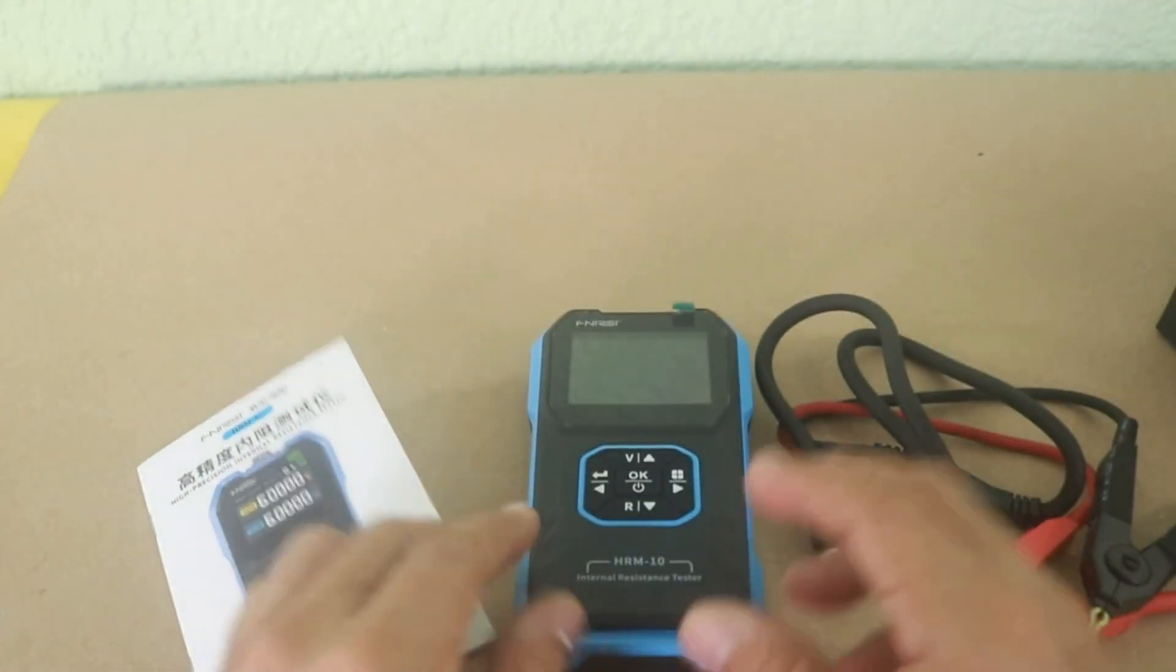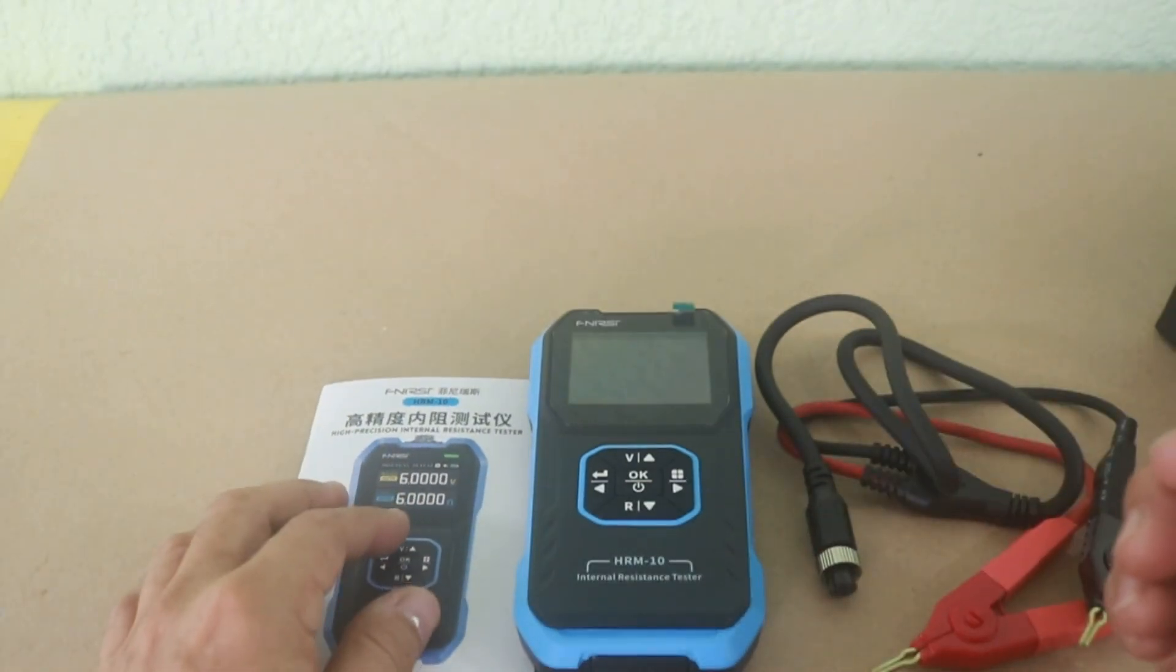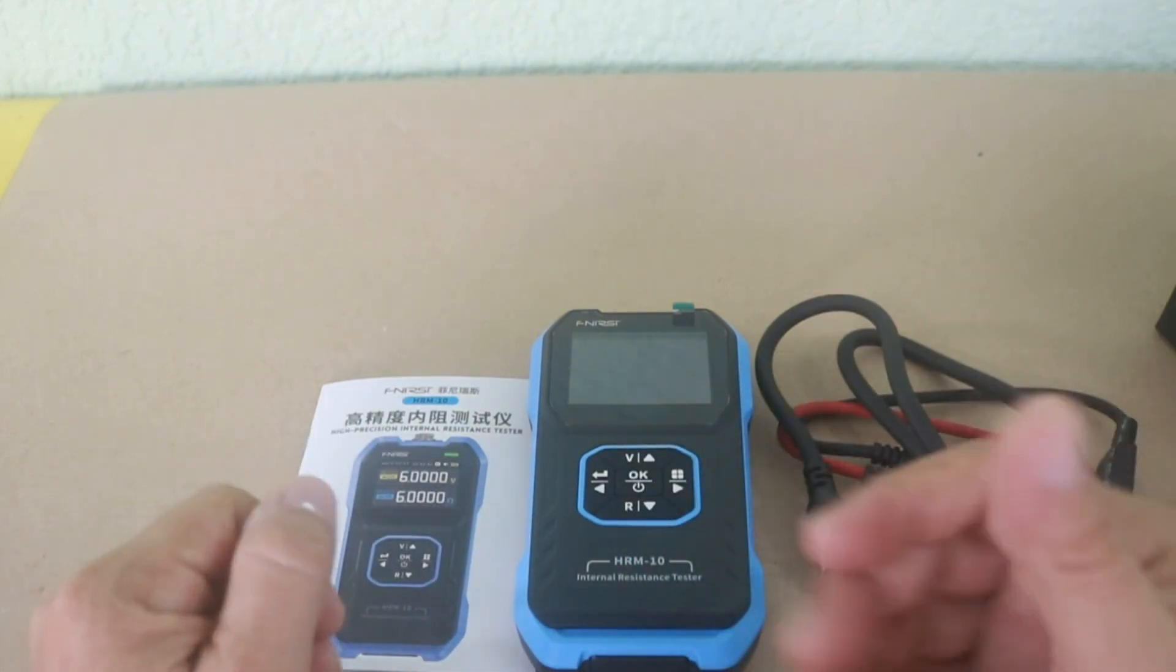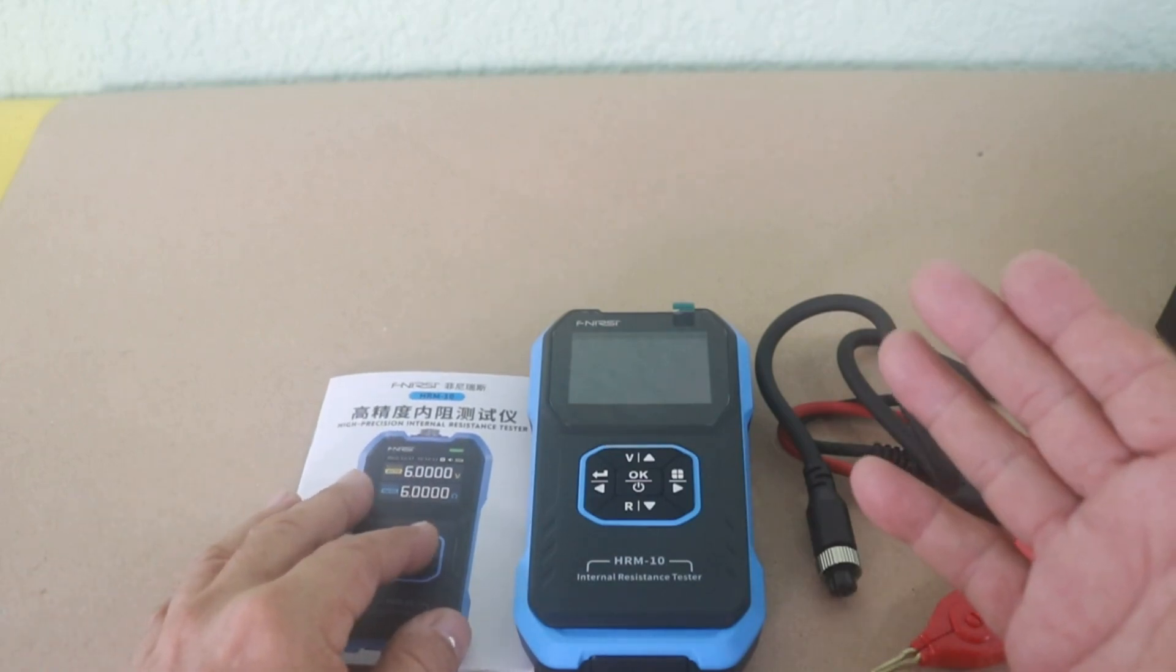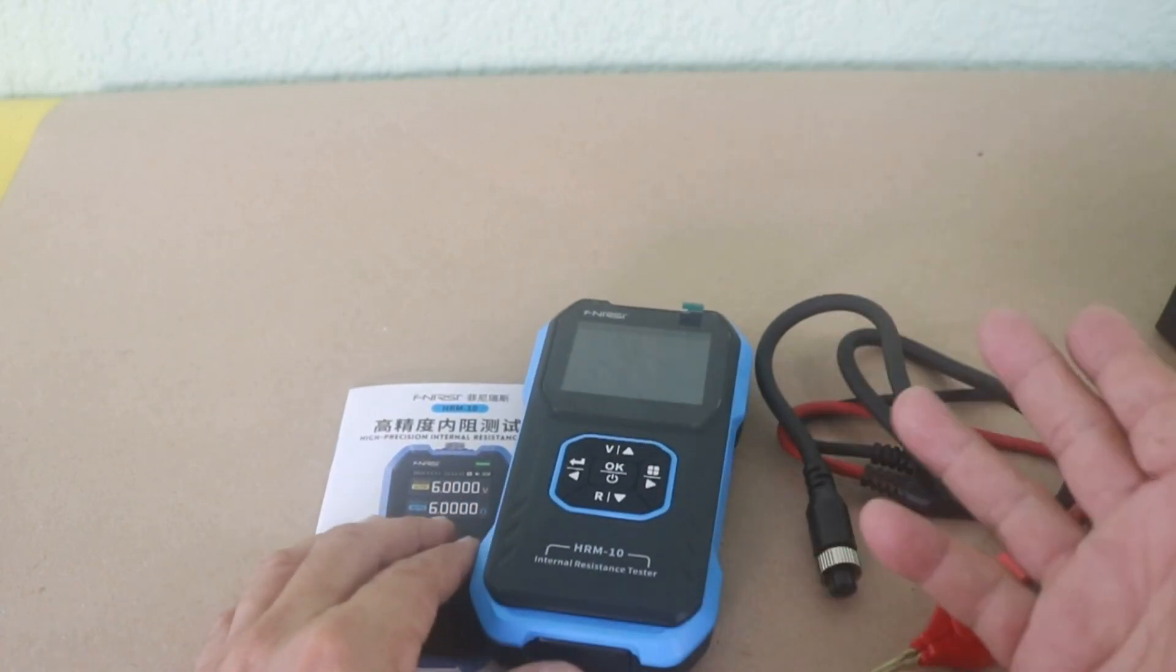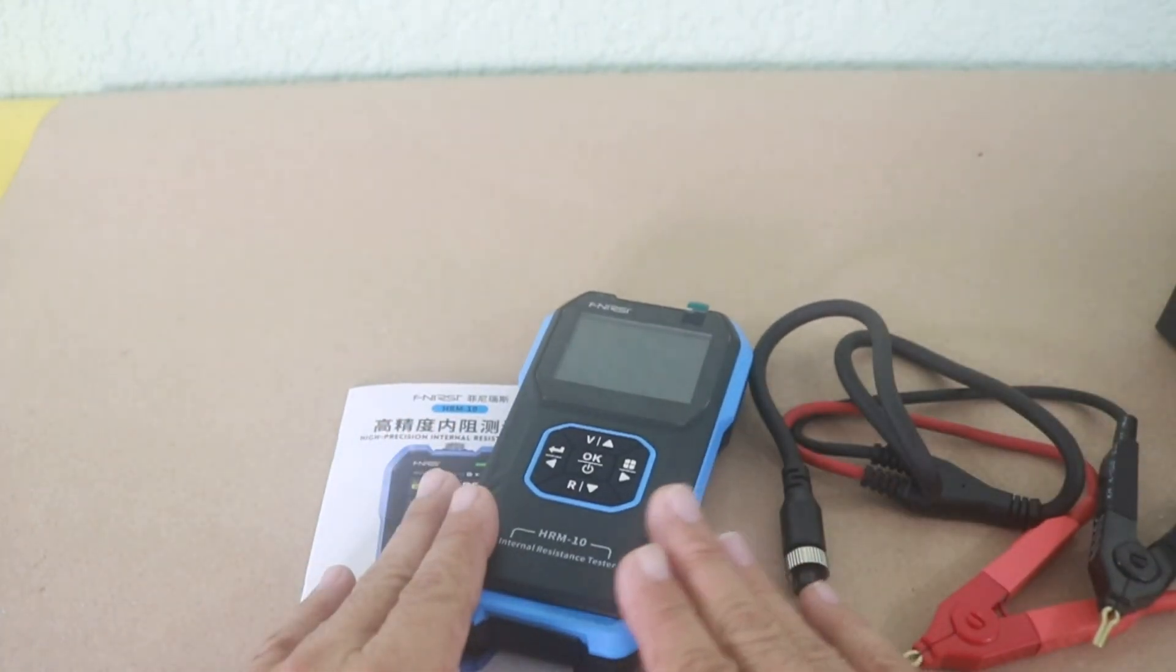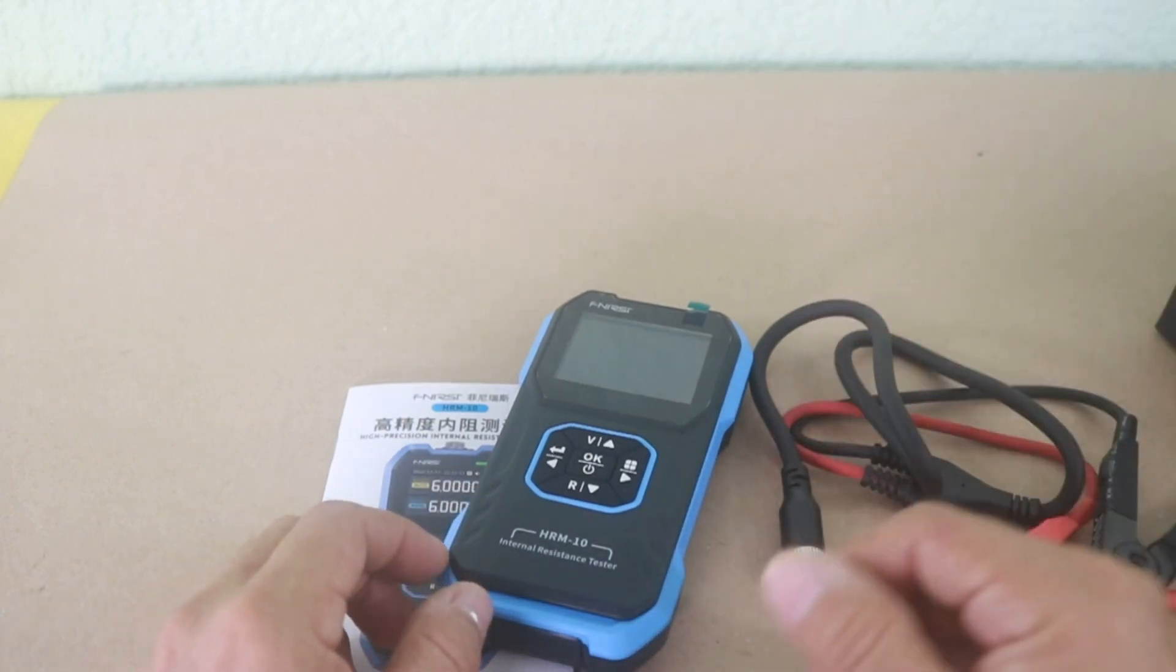So why would you want to check the internal resistance of a battery? Well, one of the reasons is that as the battery ages, the internal resistance goes higher. So an old battery will have more internal resistance and therefore the maximum capacity to deliver current will go down. An old battery will give you less amps than a new one. This is a natural process as the internal chemistry degrades.